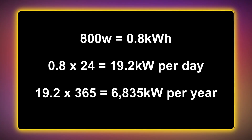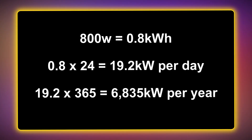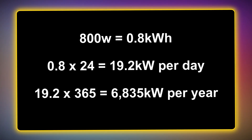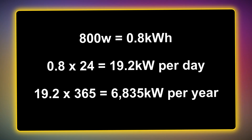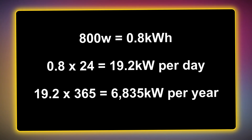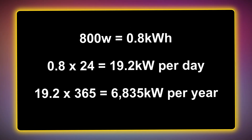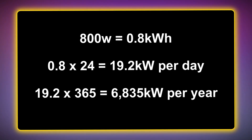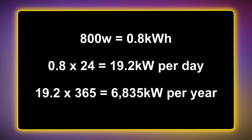We're just going to use a round number for our example. Let's say our rig takes up 800 watts of power overall. This means every day it takes up 19.2 kilowatts — that's 0.8 kilowatts per hour times 24 hours. Times the 19.2 kilowatts by 365 days gives us a figure of 6,835 kilowatts per year.